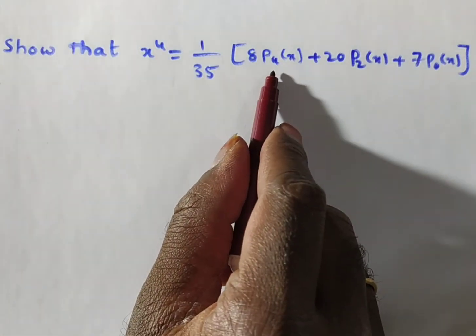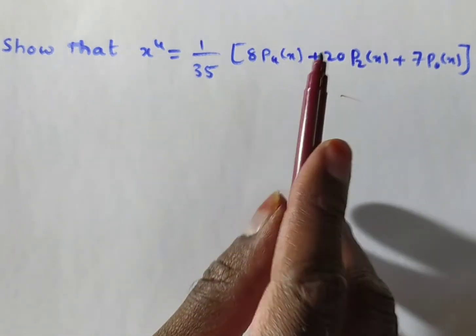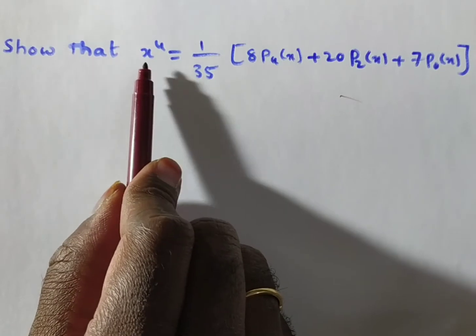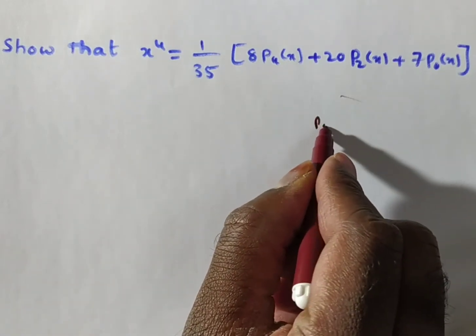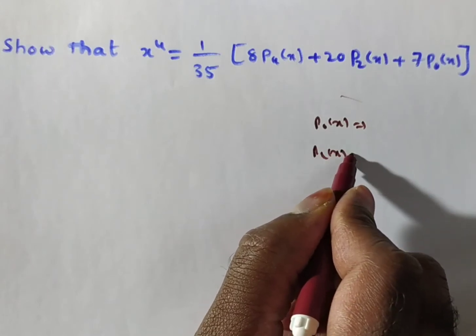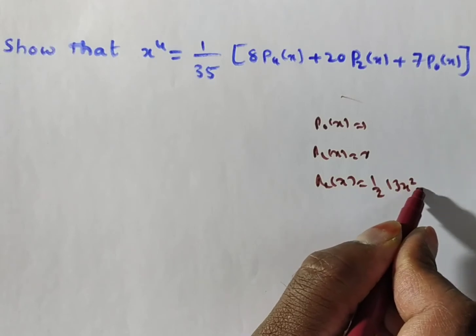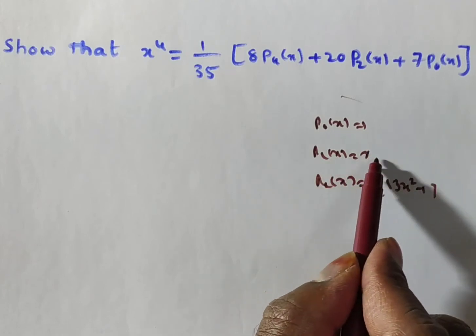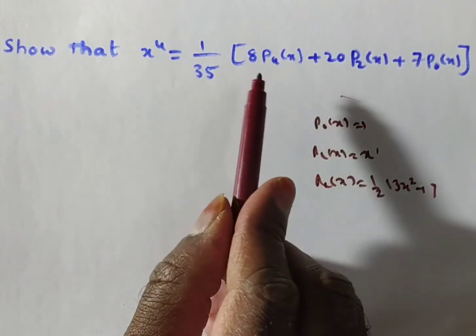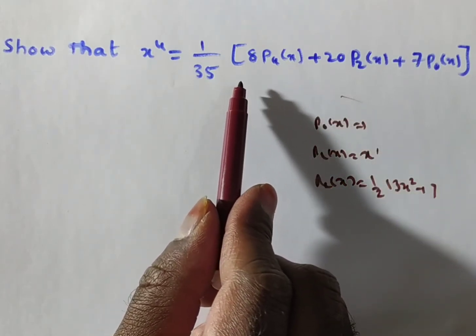To prove this, you only need to know P₄(x), P₂(x), and P₀(x). First, recognize that x⁴ involves even powers, so it will contain P₄, P₂, and P₀ — not P₅ or P₃. Remember: P₀ starts with x⁰, P₁ with x¹, P₂ with x², and P₄ with x⁴. So we do not need P₅, P₆, or P₇.